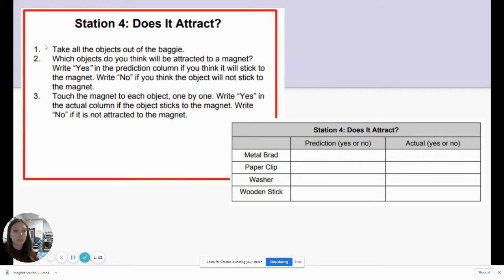So your lab procedure—these are the steps, the sequence of your assignment—says take all the objects out of the baggie. Which objects do you think will be attracted to a magnet? Write yes in the prediction column if you think it will stick to the magnet.